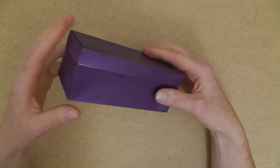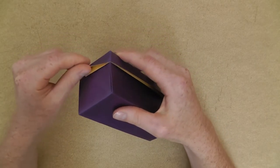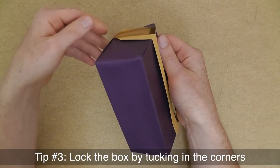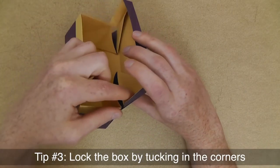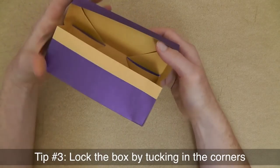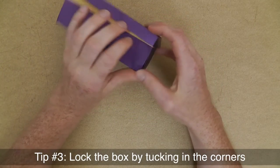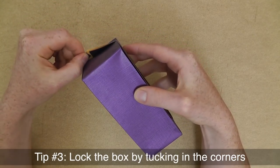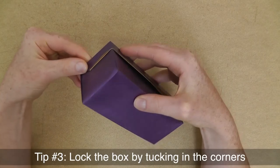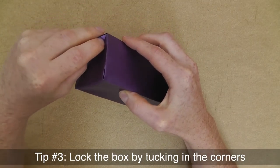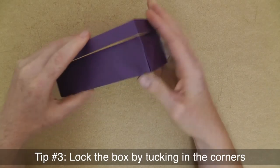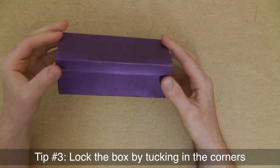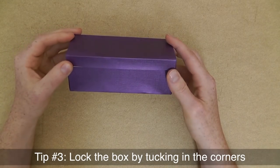Tip number three is a really quick one. And that's if you want to give away the box, lock it by taking out this corner right here, unfolding it, same on the other side, then closing the lid again and tucking inside underneath that extra layer with the color change. And then you've got a nicely locked box. Tip number three, quick and easy, but really useful for presents.